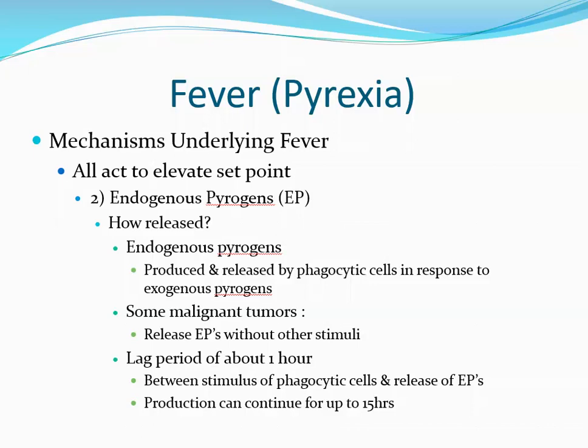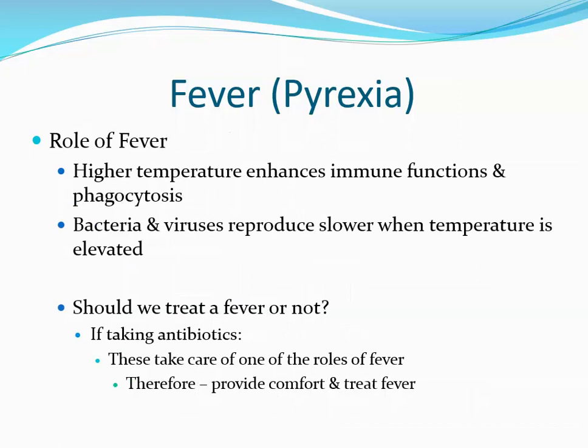Endogenous pyrogens are extremely potent — you need very small amounts to initiate a fever. What is the role of a fever? Many people believe higher body temperatures kill bacteria, but that is false — the temperature needed to kill bacteria would also kill the person. What a fever does is enhance immune functions and phagocytosis, revving up our immune system and making phagocytic cells much more active. Secondly, bacteria and viruses reproduce more slowly when temperature is elevated, making it easier for our defenses to handle them.